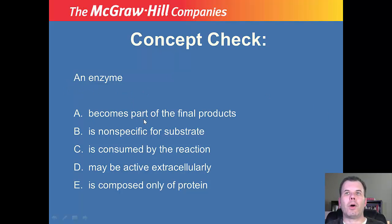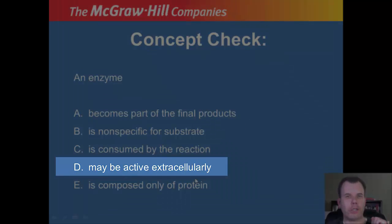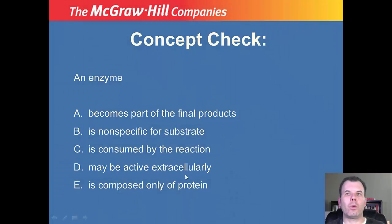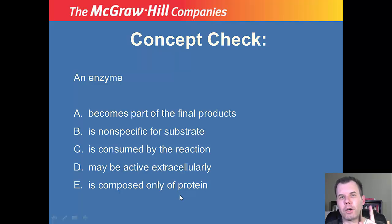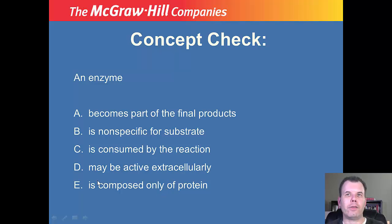A question: does an enzyme become part of the final products, is it nonspecific, consumed by the reaction, active extracellularly, or composed only of protein? The correct answer is D — may be active extracellularly. Think of exo- and endoenzymes: enzymes can work outside the cell. Some of you might have thought E — composed only of protein — but that's not always the case because cofactors and coenzymes also play a role. So D is correct.